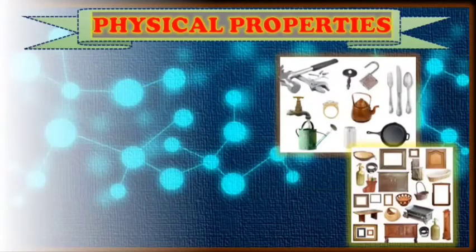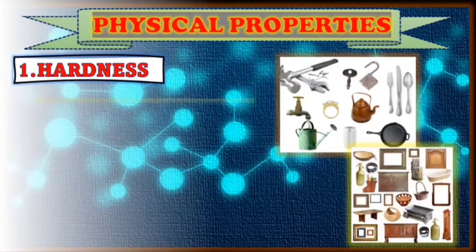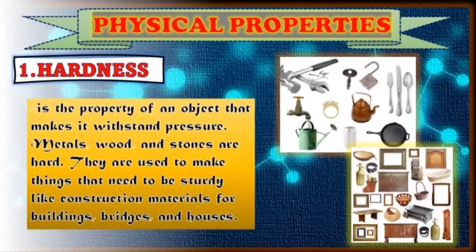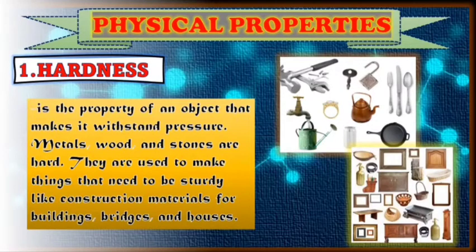Let's take the physical properties of materials one by one. The first one is hardness. Hardness is the property of an object that makes it withstand pressure. Metals, wood, and stones are hard. They are used to make things that need to be sturdy, like construction materials for building bridges and houses. So these are things that are hard and not easily damaged.